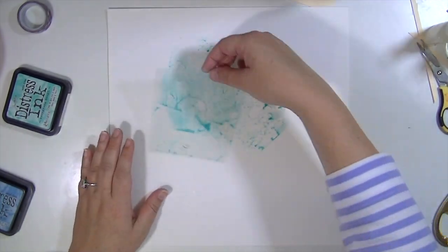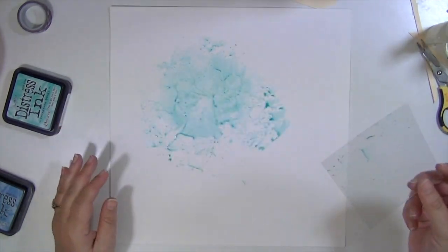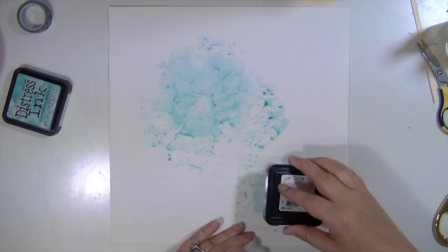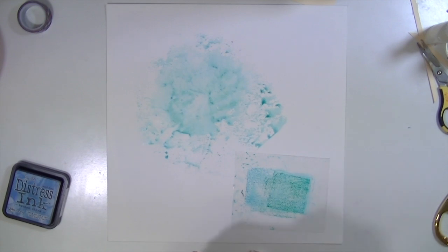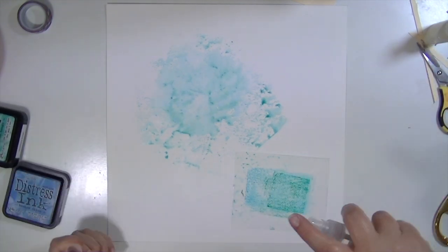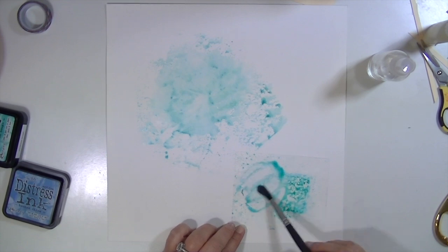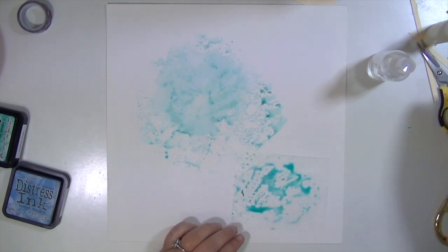Now I did gesso this so it's going to have a different effect than it did on craft paper. That's one of the things I really like about this technique - depending on what kind of paper you put it on and if it's gessoed or not and if you mix your own color, it looks different but you still get that watercolor effect. It's just really fun.